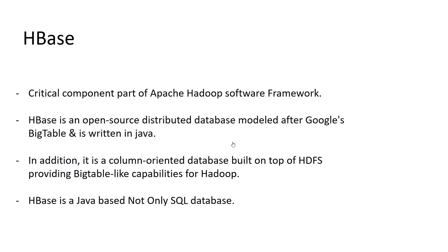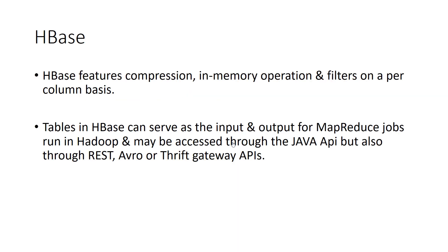When dealing with big data, column-oriented databases like Cassandra and HBase can handle that scale. HBase is built on top of HDFS, which is part of the Hadoop system, and it provides Bigtable-like capabilities for Hadoop.